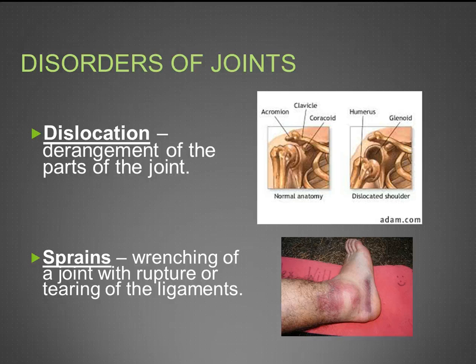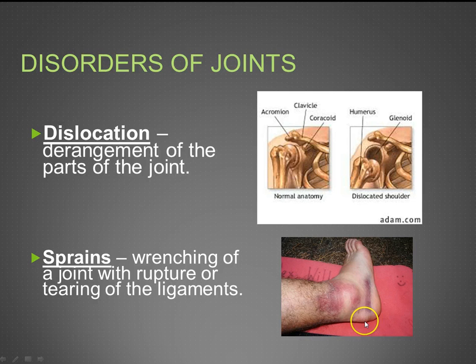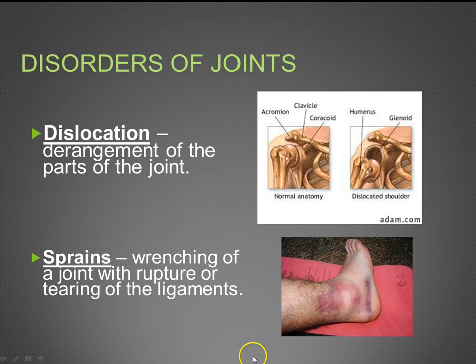Next are different disorders of the joints. First is dislocation, a de-arrangement of parts of the joint — meaning the joint actually comes apart. Next is a sprain, which is a wrenching of the joint with rupture or tearing of the ligaments, as seen in an ankle injury where the ligaments on the side are torn or ruptured, causing bleeding and swelling.